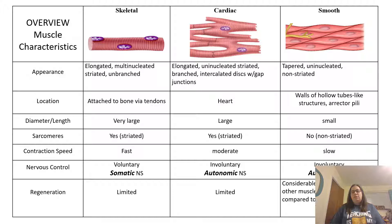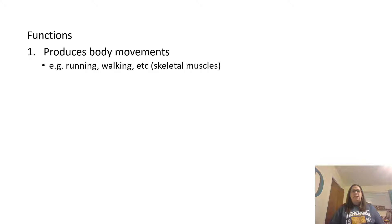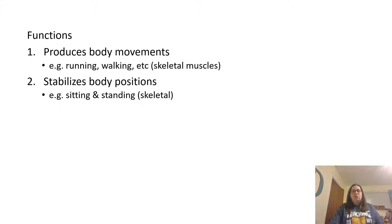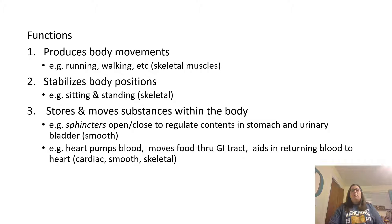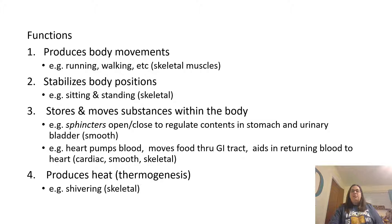What's the function of the muscular system? It's to produce body movements like running and walking — that's your skeletal muscles. It also helps stabilize your body positions like sitting and standing, again using skeletal muscles. Muscles store and move substances throughout your body; sphincters open and close to move contents from one area to the next, like from your stomach into your intestines or from your urinary bladder — that's smooth muscle. Your heart pumps blood, moves food through your GI tract, and aids in returning blood to your heart — a combination of cardiac, smooth, and skeletal muscle. Muscles also produce heat through thermogenesis; shivering causes skeletal muscles to generate heat and warm your body.